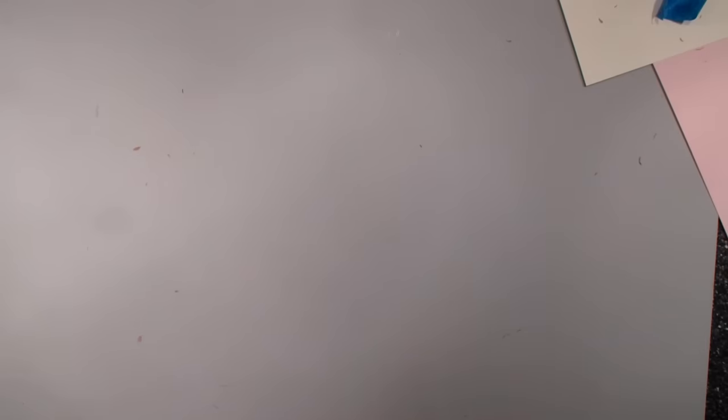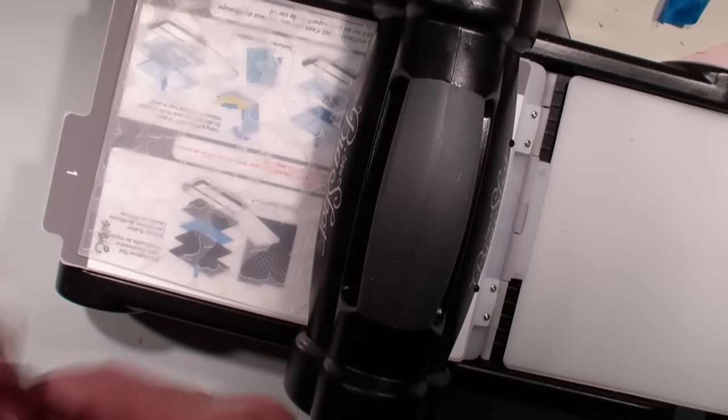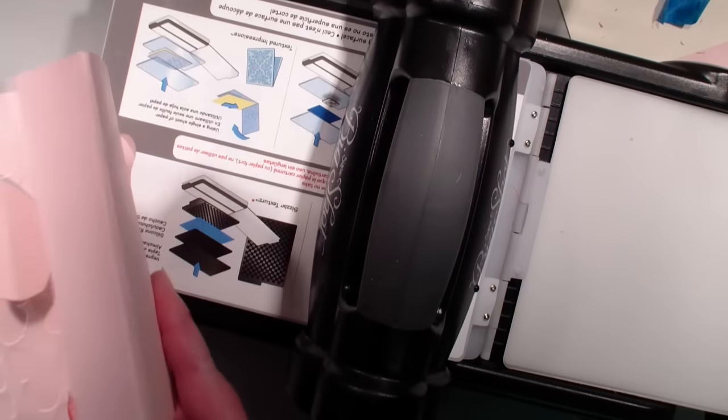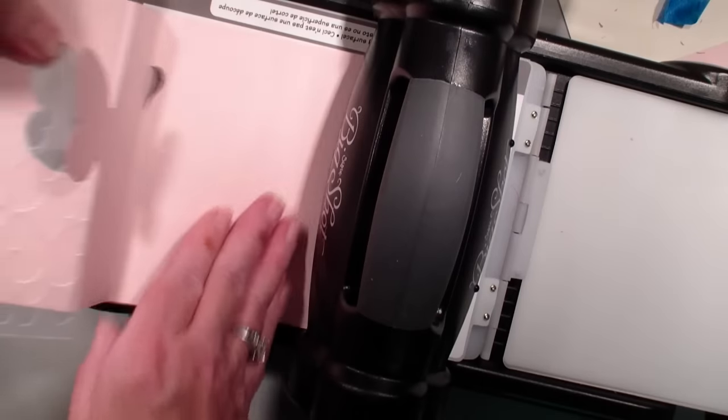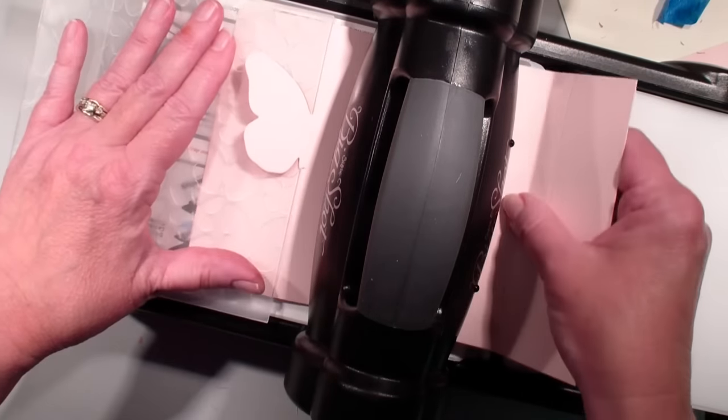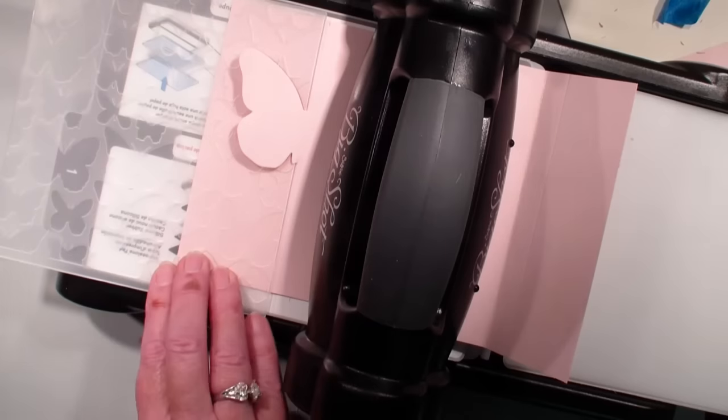So now I'm going to bring in that folder and I'm simply going to open my folder up. And I want that solid butterfly to be on the top because I just want to emboss the flap. I'm going to lay that down like so. Making sure my score line is there.